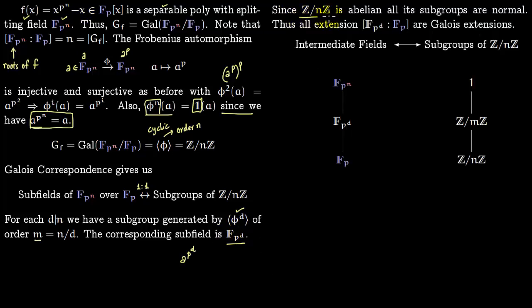Since this is an abelian group, all its subgroups are normal. Therefore all extensions are Galois extensions.